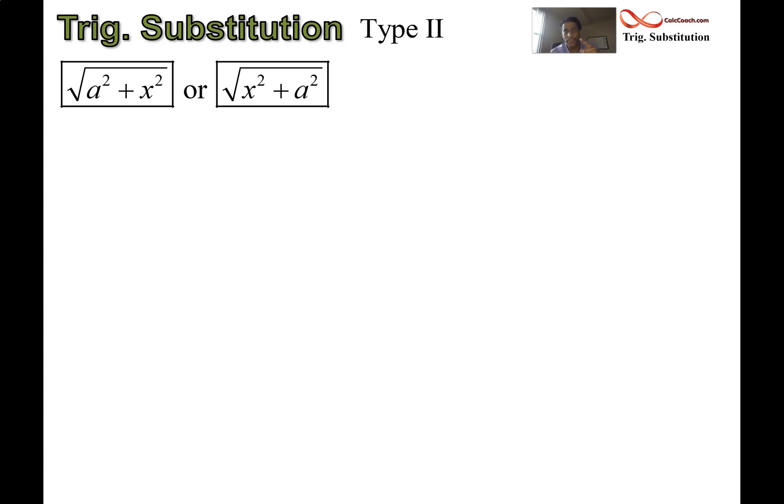All my previous examples have been only Type 1, letting x equal a sine theta. With this type, where we have a² + x² or x² + a² under the radical, it won't work out that we use that same trig sub. I go through why it's changed here on this slide, and I do an example on the next slide. In all of these, we're going to assume that a is greater than 0.